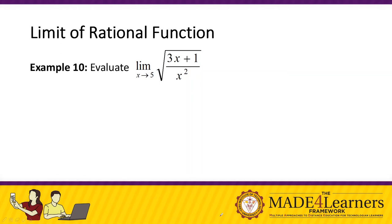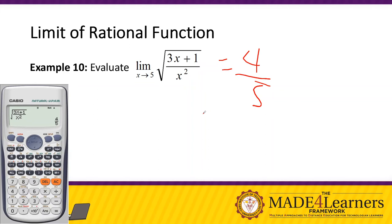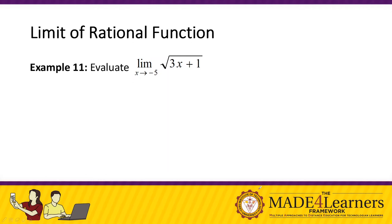Example 10: evaluate the limit of √(3x + 1) / x² as x approaches 5. We use the calculator with substitution rule — input √(3x + 1) divided by x², then set x = 5. The result is 4/5, so the limit of this function is 4/5.